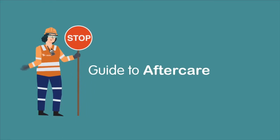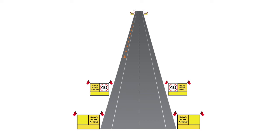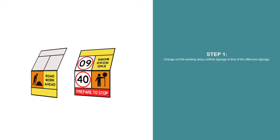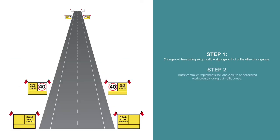Aftercare is the reduction of speed following roadworks to ensure new roads settle and extends the life of the new surface. Aftercare signage indicates there are roadworks ahead — workers are not present, but there may be changes to traffic conditions. Step 1: Change out the existing Corflute signage to the aftercare signage. Step 2: Traffic controller implements the lane closure or delineated work area by laying out traffic cones.